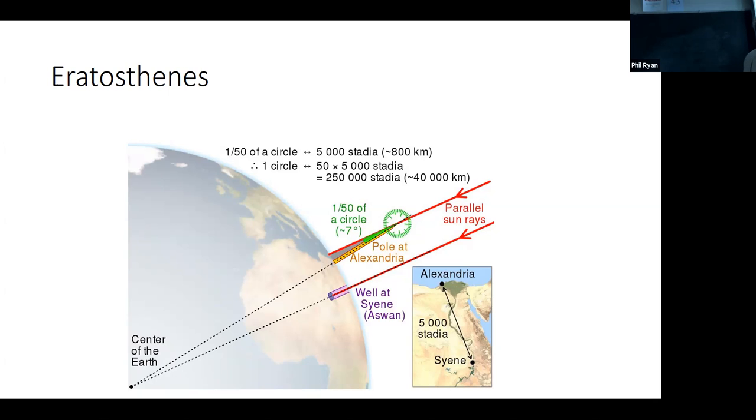And so if we, the sun is so far away that we can just assume that these light rays are parallel. So if that's the case, then Alexandria must be 1/50th of the circumference of the world away from Cyrene. And since it was 5,000 stadia away, Earth has a circumference of 250,000 stadia, which is around 40,000 kilometers. And that's not bad. Actually, that's a pretty good estimate for the size of the world.